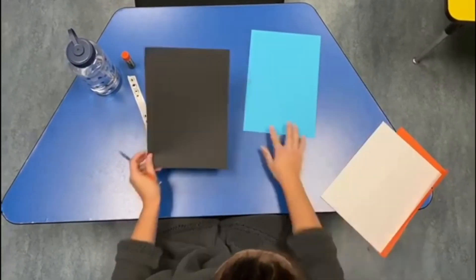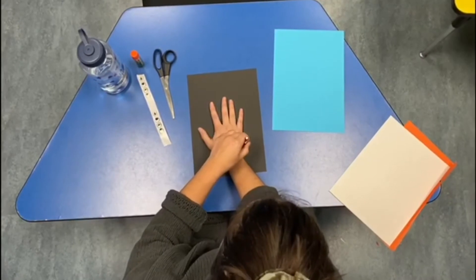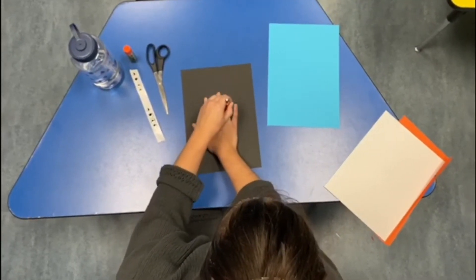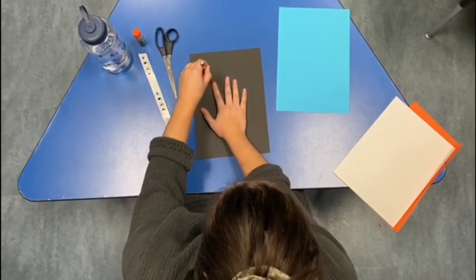First things first, let's get the body done. So you are going to place your hand on a black piece of paper and you're going to trace it out just like this.